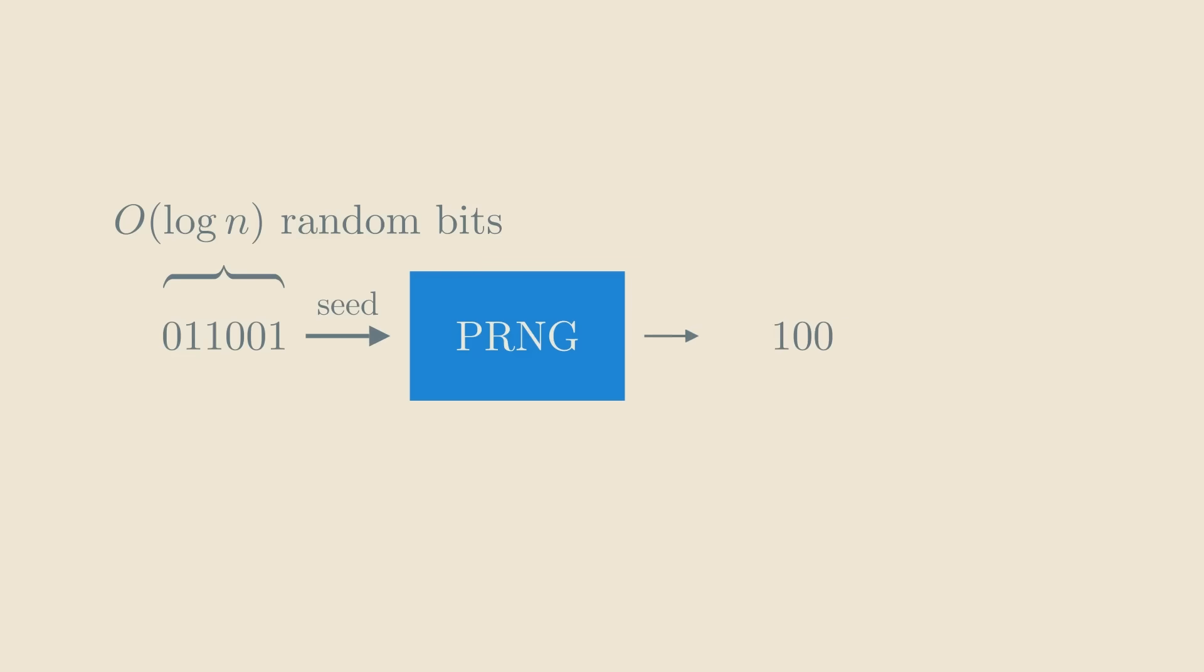To understand the proof, we need to talk about pseudorandom generators. As we mentioned, a pseudorandom generator is a function that receives a seed consisting of a few random bits. In our case, a few means on the order of log n. The generator takes this seed and spends polynomial time to output n bits that look random.